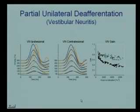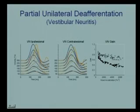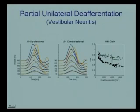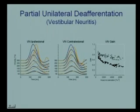This is a person who's had a partial unilateral deafferentation — spontaneous vestibular neuritis. This is in the on direction of the sole semicircular canal; this is in the off direction. In the on direction, the gain starts at about 0.8 and goes down to about 0.7; in the off direction it starts at 0.7 and goes down to about 0.4. This is the on-off asymmetry of a single semicircular canal — the excited direction and the inhibitory direction. This is push without pull, and this is pull without push.